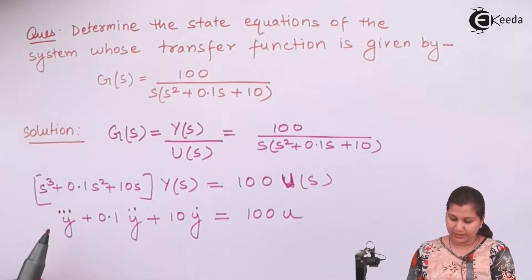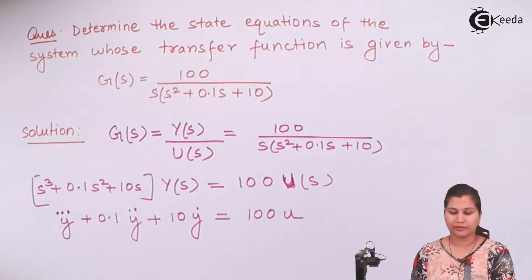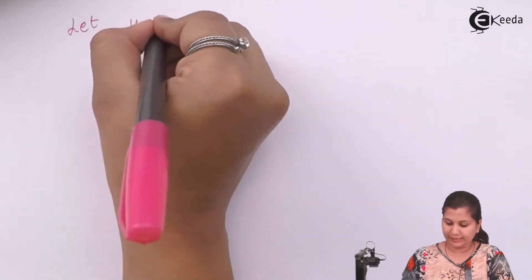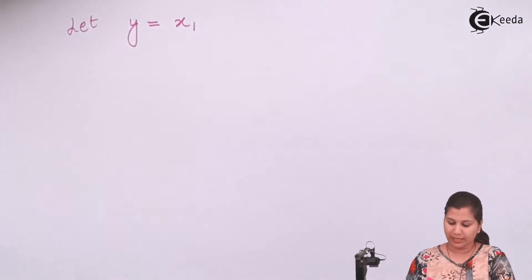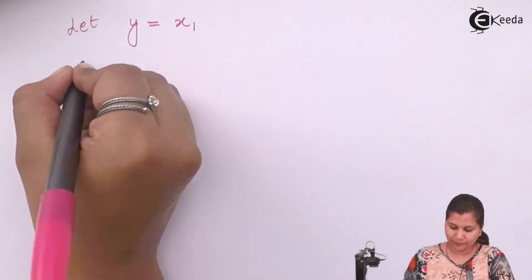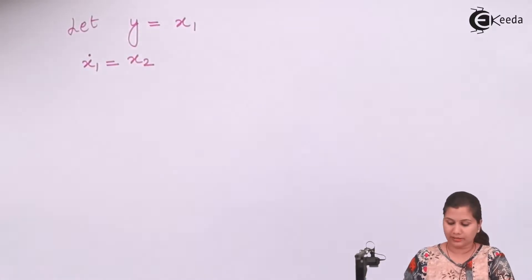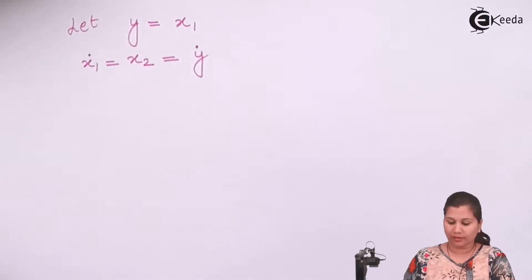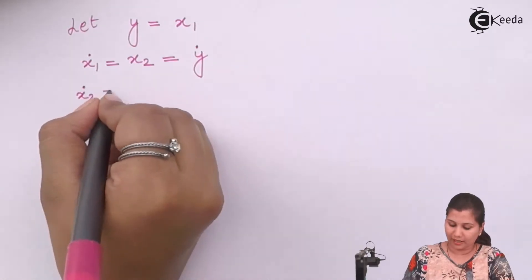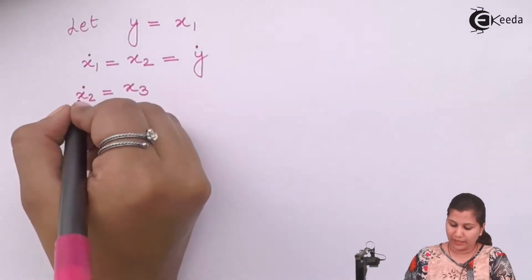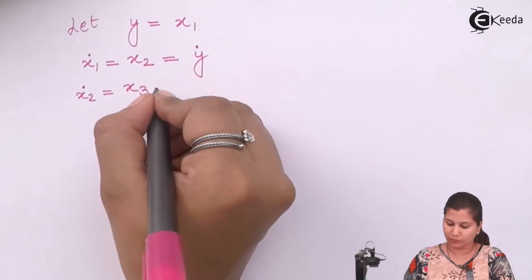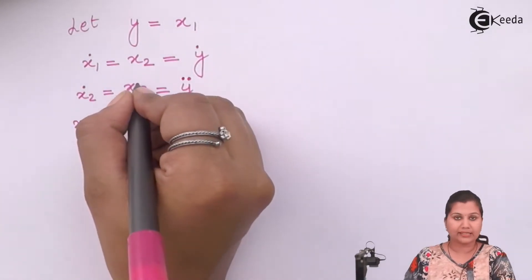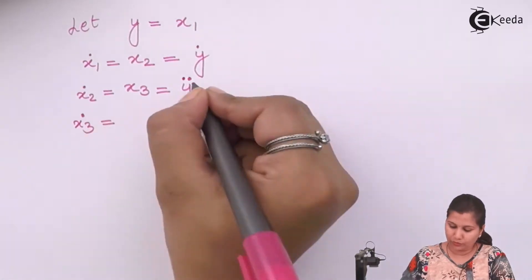To obtain the state equations we have to assume the state variables. We assume our output Y as the first state variable X1. Then X1 dot is the second state variable X2, which equals Ẏ. The differentiation of X2 gives the third state variable X3, so X2 dot equals Ÿ. Then X3 dot equals Y triple dot.